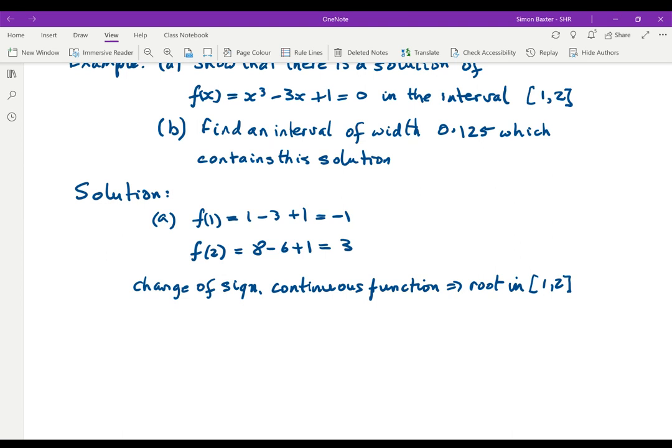Now for interval bisection, that means cut in half. So if we're going to cut in half we need the midpoint of [1,2]. That's quite easy. That is 1.5.